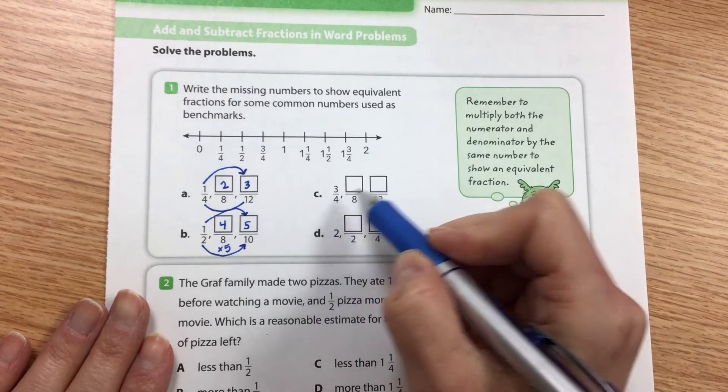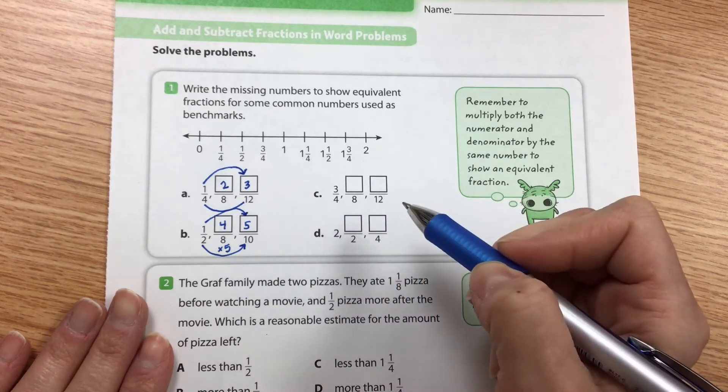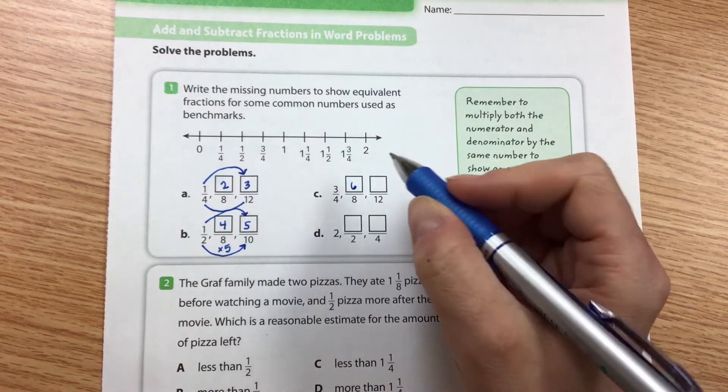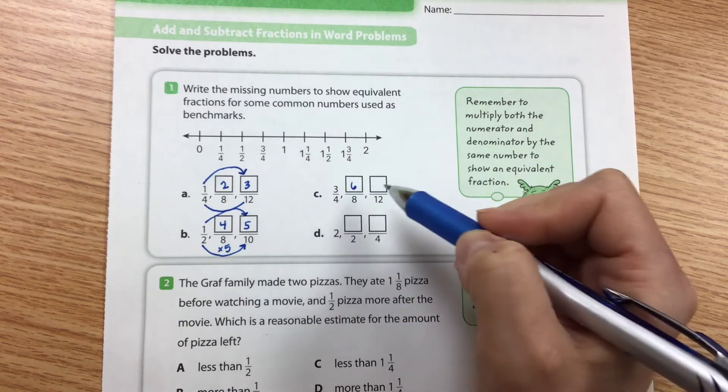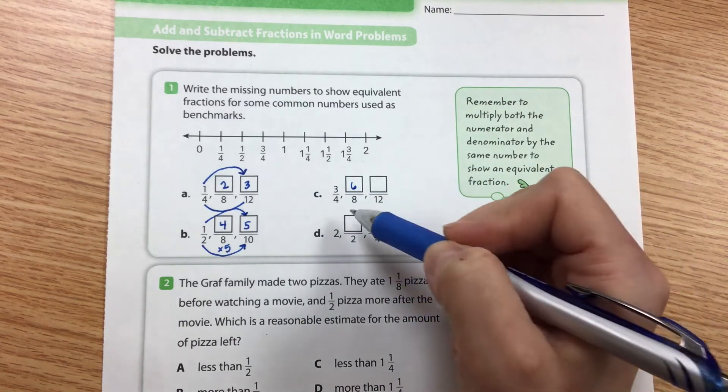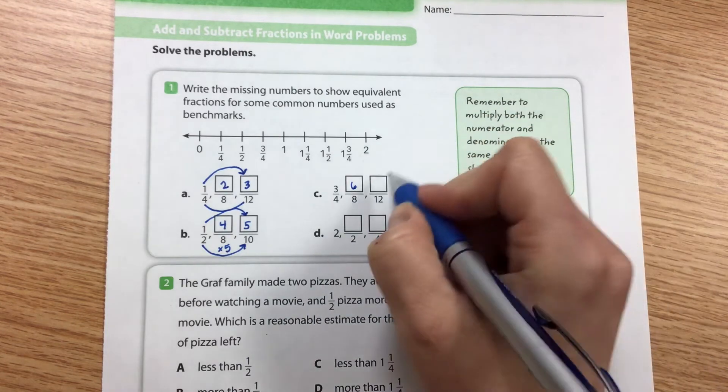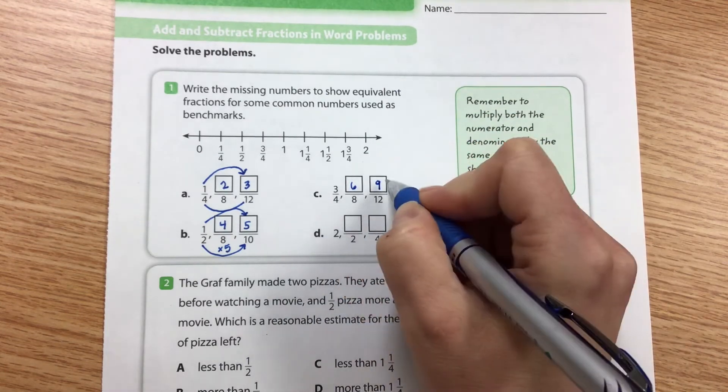All right, three fourths is equal to something over eight. That would be six eighths because remember this is the same thing. Three fourths is the same thing as six eighths. What can we do to four to turn into twelve? Multiply by three. So three times three is nine.